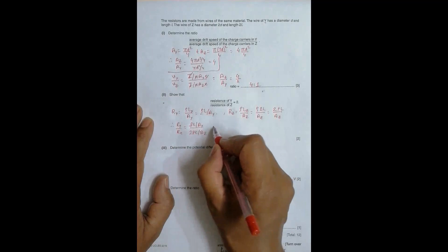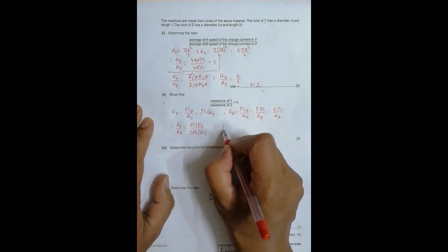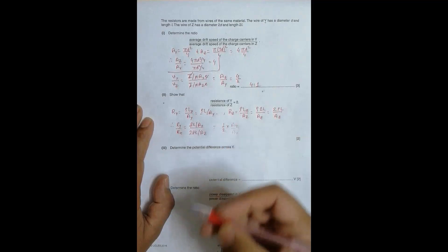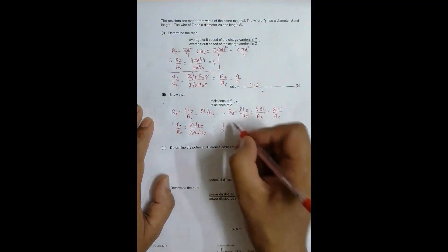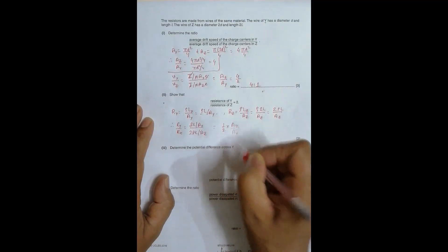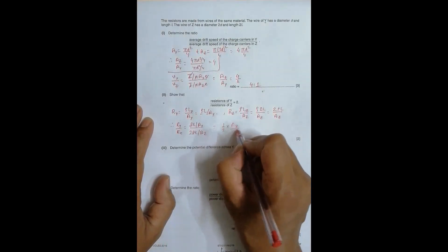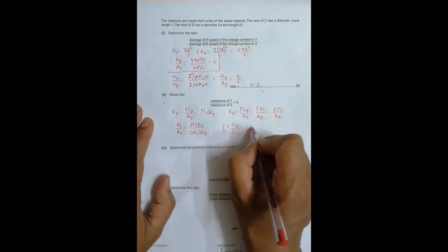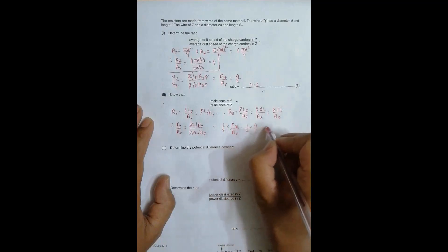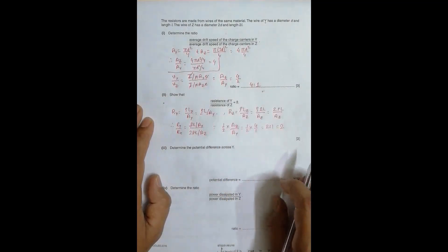So therefore, R_Y by R_Z is equal to rho L by A_Y divided by this R_Z is equal to 2 rho L by A_Z. Again, this and this cancel. So as it goes up, so it is 1 by 2 into A_Z by A_Y. See, my pen is giving me trouble. So let me fetch another pen. It doesn't take long time. So I have it here. So it is A_Z by A_Y equal to 1 by 2 into 4 by 1 equal to 2 is to 1. Or I can simply say, it's 2 as given by the question.